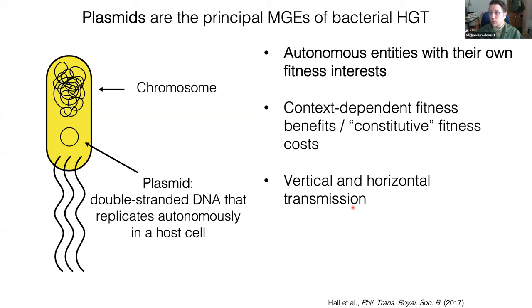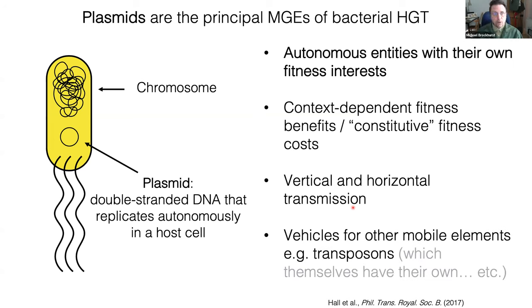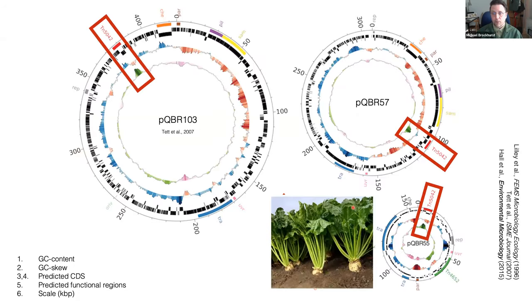We can get different levels of selection operating on the plasmid versus the chromosome, giving them different evolutionary properties. As Jamie touched upon, plasmids act as vehicles for other mobile elements and often have transposons nested within them, which themselves can have their own fitness interests and can hitch rides on plasmids. We can think of a Russian doll model of interactions between mobile elements nested within plasmids.